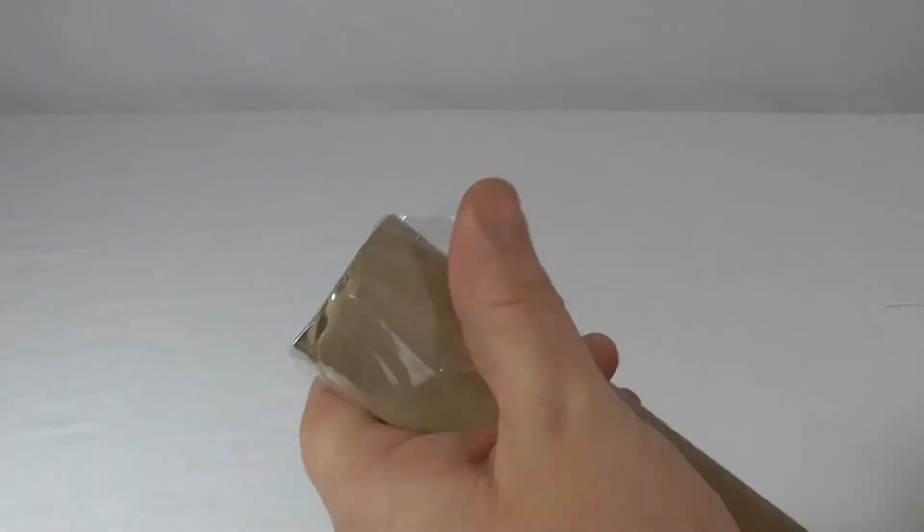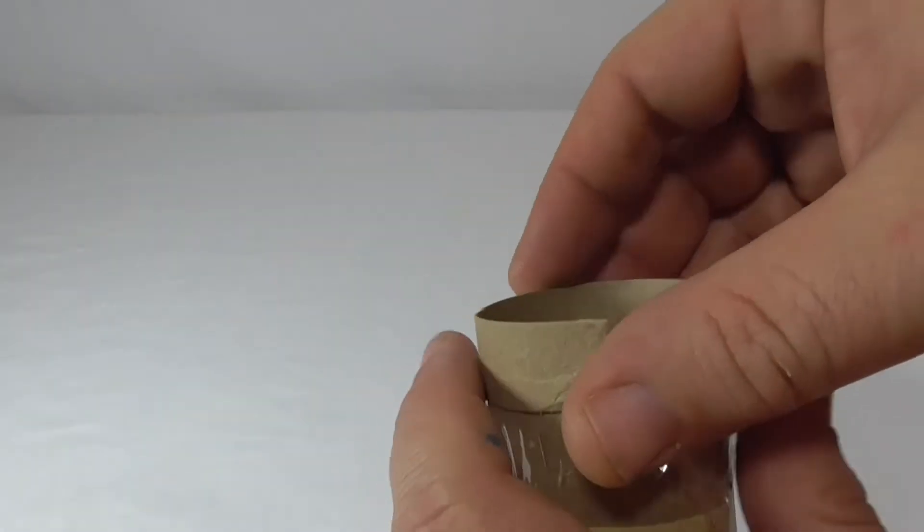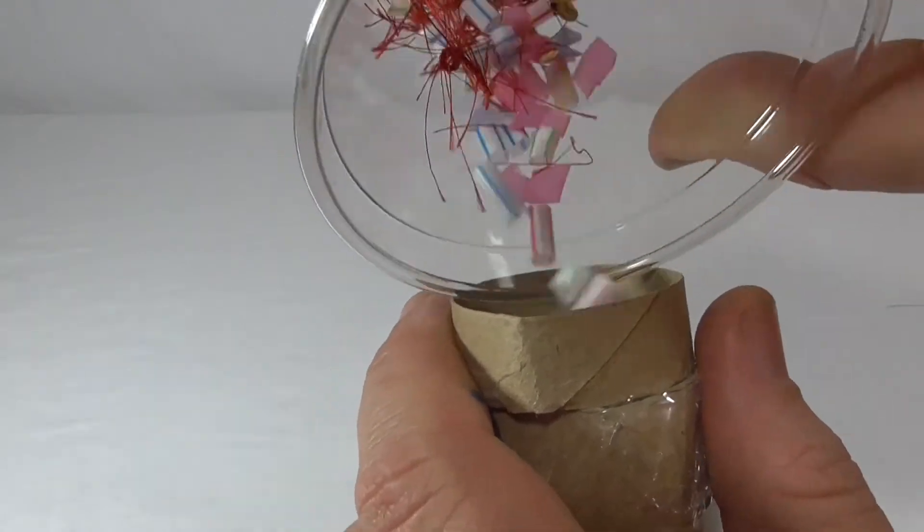Cover one end of the paper towel roll with a bit of saran wrap. Place the ring back on the tube and pour colored bits and bobs into the ring.